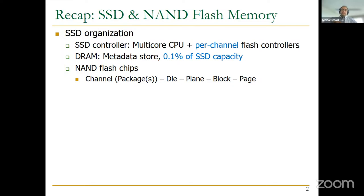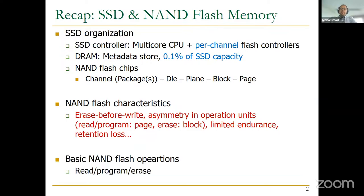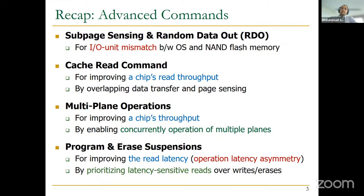We also talked about NAND flash chips and their organization: flash chips distributed across channels in packages, each package has several dies, each die has several planes, and each plane has blocks and pages. We also talked about NAND flash characteristics — they need erases before write, read and program operations are done in page granularity, and erases must be done in block granularity. We covered limited endurance and retention loss.